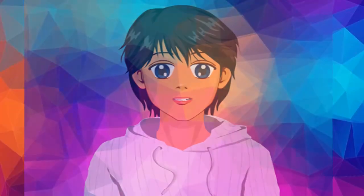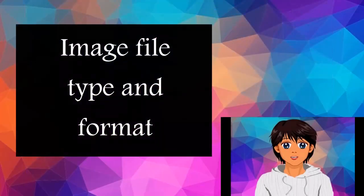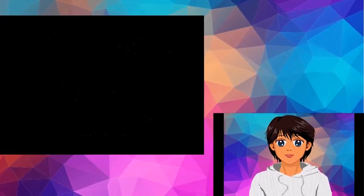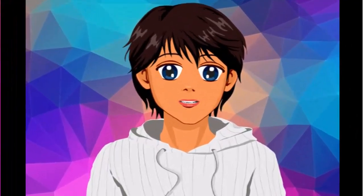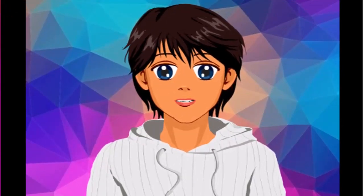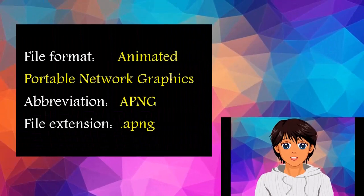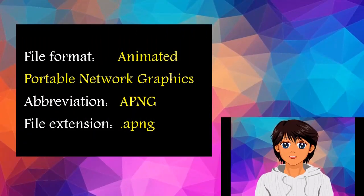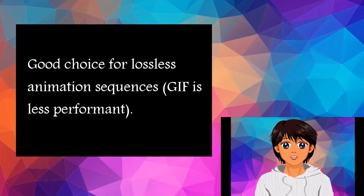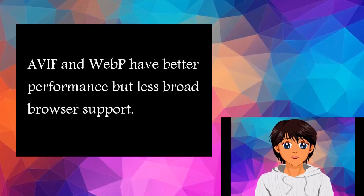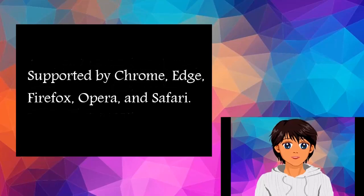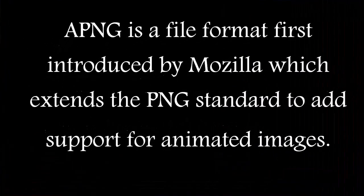Image File Types and Formats: The following image file types are generally supported by web browsers. This section provides insights to help you select the most appropriate formats for your site's imagery. First, Animated Portable Network Graphics (APNG) — a good choice for lossless animation sequences. AVIF and WebP have better performance but less broad browser support. Supported by Chrome, Edge, Firefox, Opera, and Safari. APNG is a file format introduced by Mozilla which extends the PNG standard to add support for animated images.